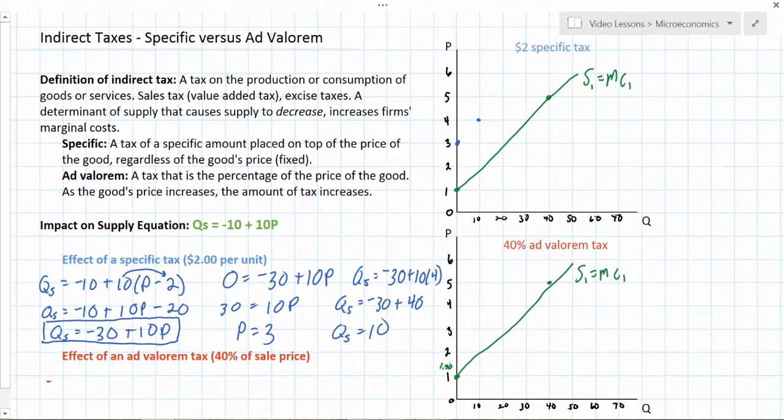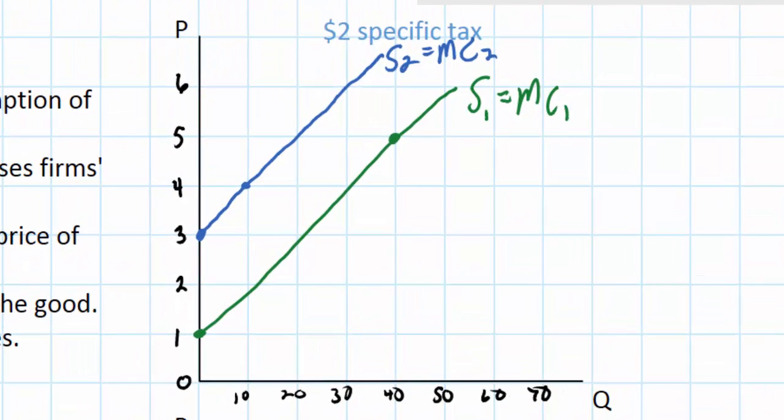Now this looks a lot like the non-mathematical example we did earlier. If I connect these two points from my supply curve, I have a new supply curve of S2 equals MC2. Notice that there is no change in the gradient or the slope of my supply curve following a specific tax. The entire curve shifted up by the amount of the tax, just like the illustration I did earlier without the equation.